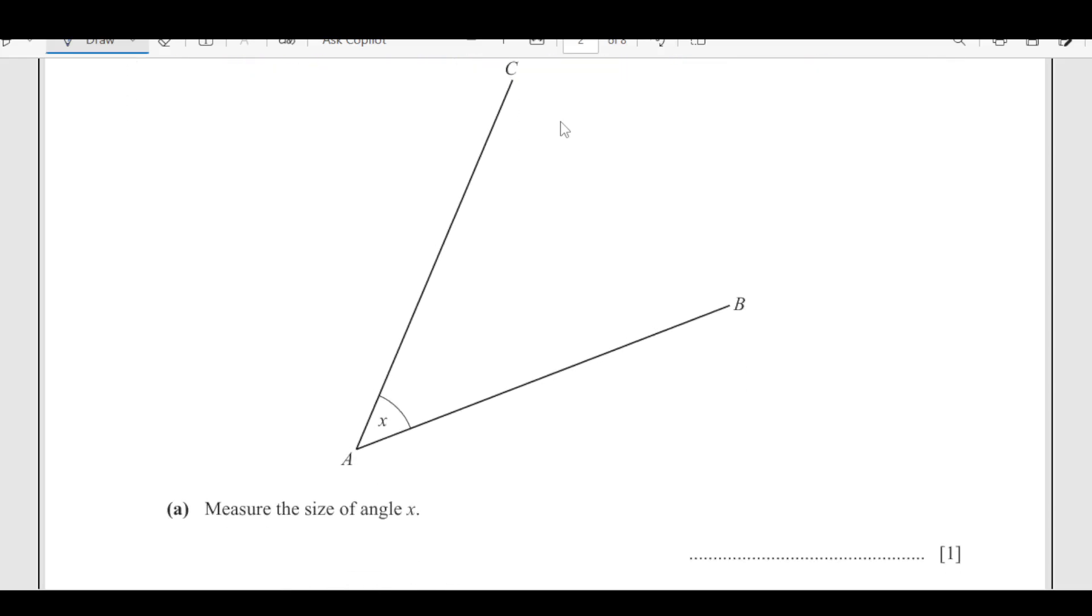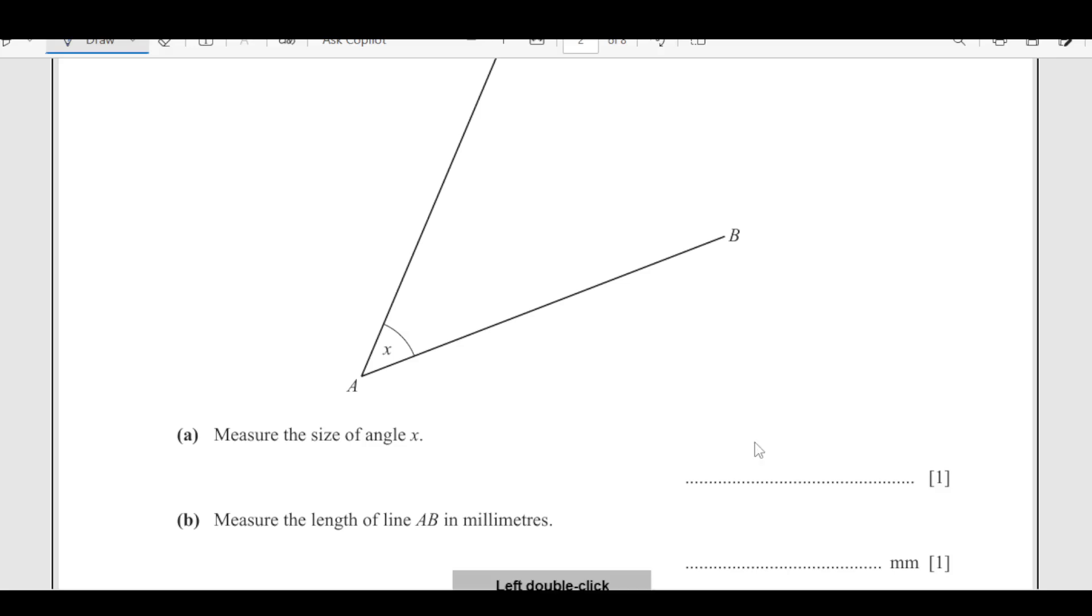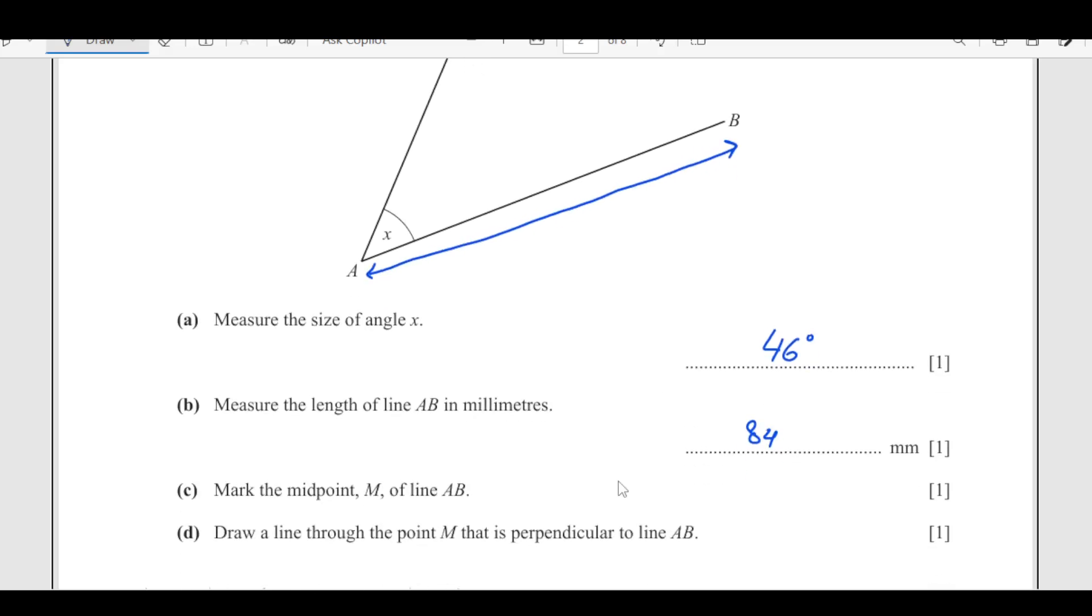Now the second question, we have this angle here. Measure the size of the angle. You place your protractor here and measure this angle. I have measured this on paper, this is 46 degrees. Measure the length of AB from here to point B. If you measure this in millimeters, this is 84, that is 8.4 centimeters.